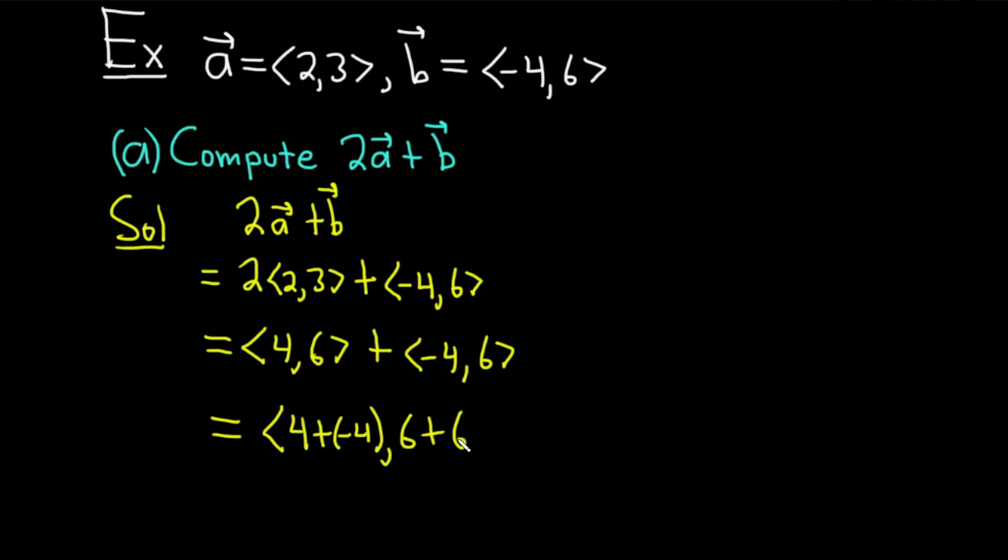This is a step that I normally skip. Basically, you could just write 0 and 12. You can just add them up and skip some steps. So this would be 0, 12. And that would be the vector that is equal to 2a plus b.